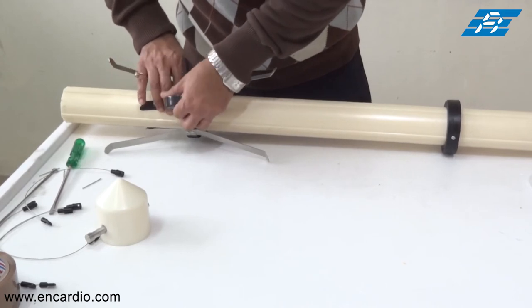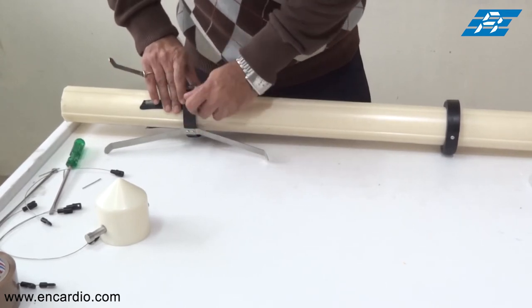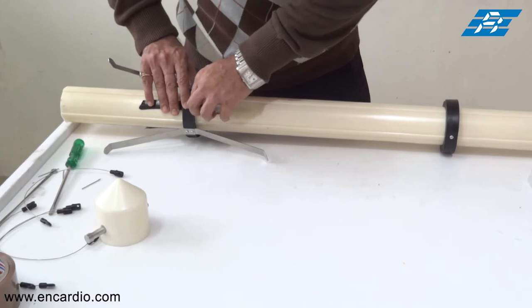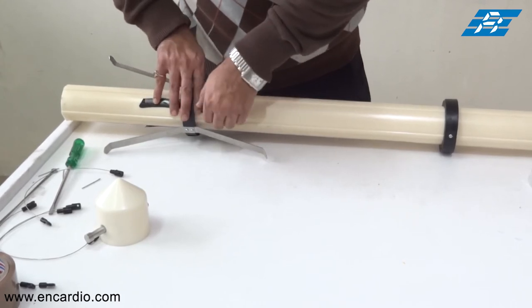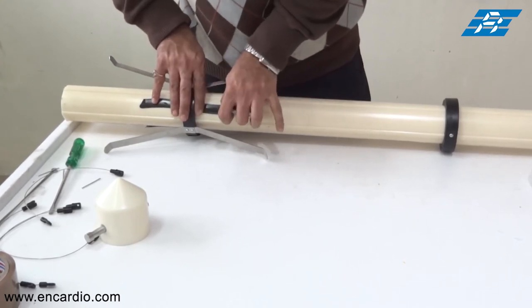When the inclinometer casing is lowered in the borehole, the sealing tape will be released on its own as it's a temporary arrangement and the spider magnets will be free for settlement measurement.